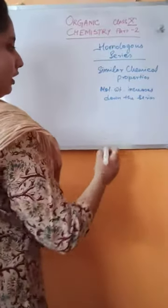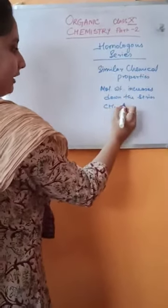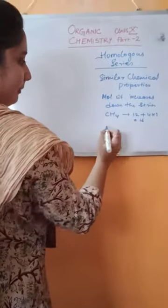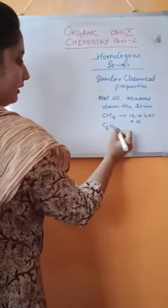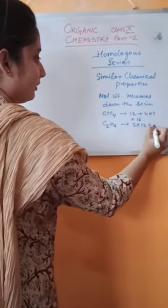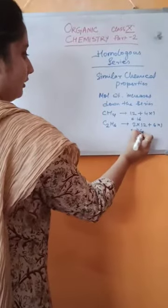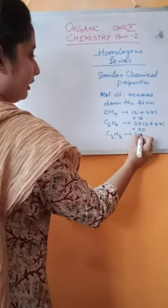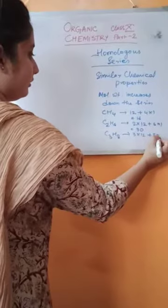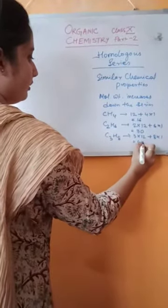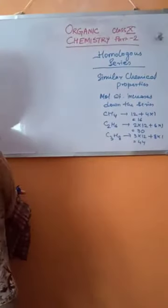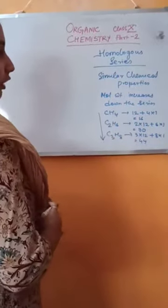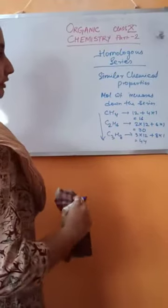That is very easy to understand. For example, methane has a molecular weight of 12 for carbon plus 4 into 1 for hydrogen, which is 16. Ethane, which is just after methane, has a molecular weight of 2 into 12 plus 6 into 1, which is 30. Propane has a molecular weight of 44. As we move down a homologous series, the molecular weight of the members of the series increases — it will be more for butane, more for pentane, and so on.